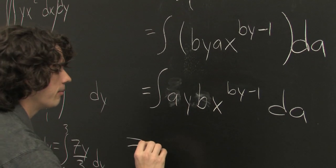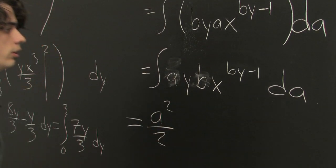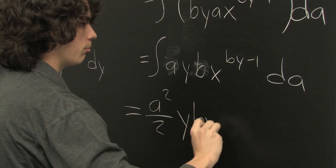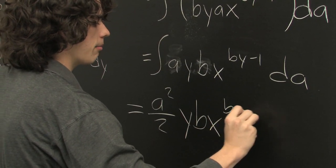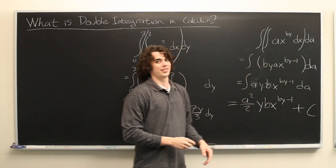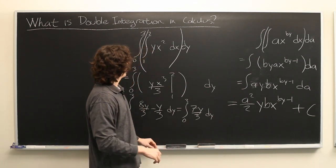So this just becomes a² over two times all this, y, b, x, to the by minus one, plus some constant c. Just add another letter into the mix. And that's essentially all there is to it.